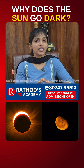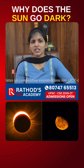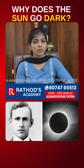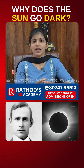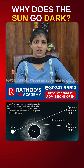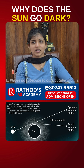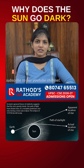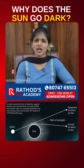Eclipses have also advanced science. Especially in the year 1919, when Arthur Eddington's observation of the solar eclipse confirmed Einstein's general theory of relativity, proving that the sun's gravity bends starlight.